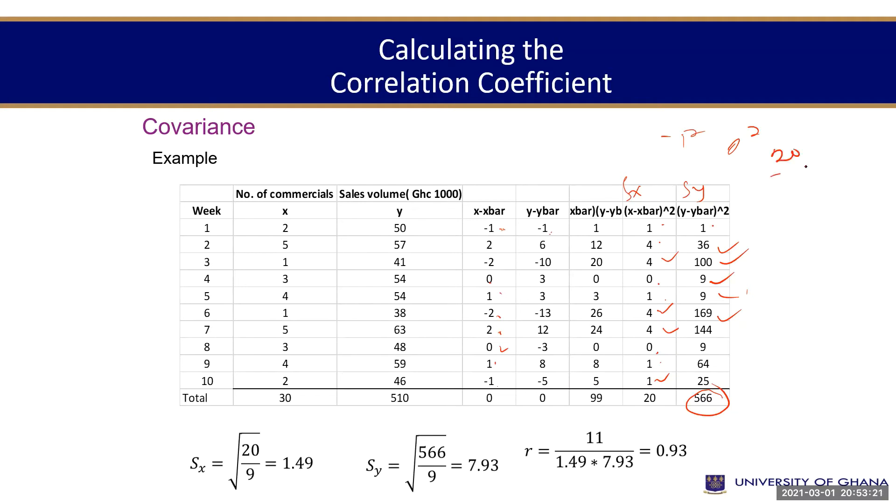That is 20 minus n-1, which is this. So you're looking at 20 divided by 9, that's 1.4. Then 2566 also divided by the denominator 10, and 10 minus 1 gives you this. So my standard deviation for x and y, respectively, when I multiply them, divided by the covariance between x and y, this gives you r.